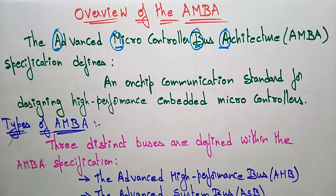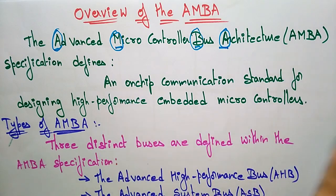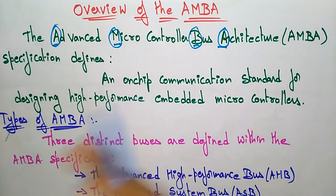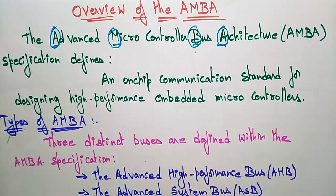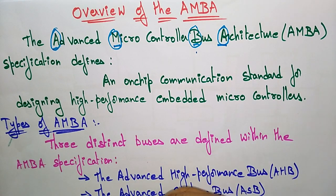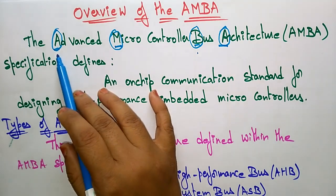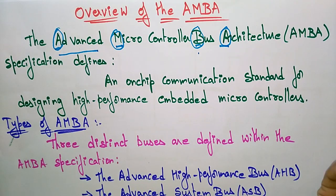We already know that bus architecture consists of the control bus, address bus, and data bus. Whatever communication we need — communication between processors or controllers to external devices or internal devices — everything will be done with the help of the bus. So far we have seen bus architectures; now let's see what this Advanced Microcontroller Bus Architecture is.